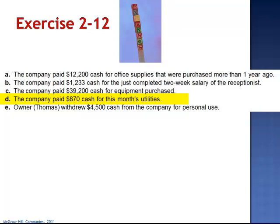Letter D: the company paid $870 in cash for this month's utilities. This transaction decreases assets — cash — and also decreases equity. Because the reduction in equity was caused by the operation of the business, this too is an expense.